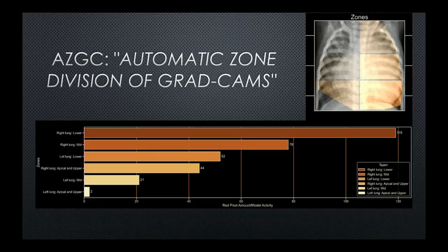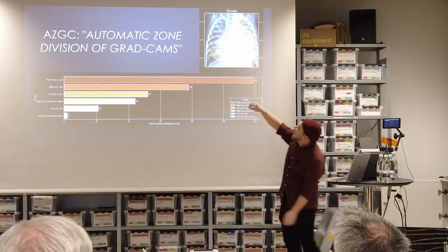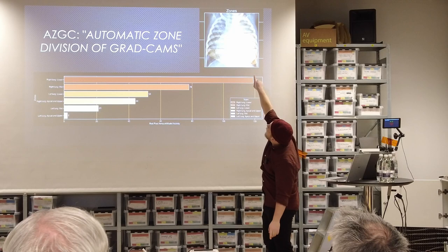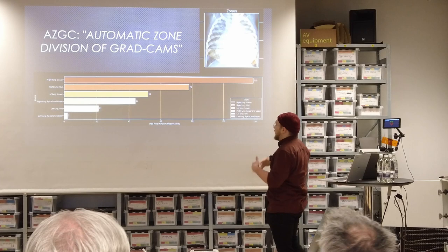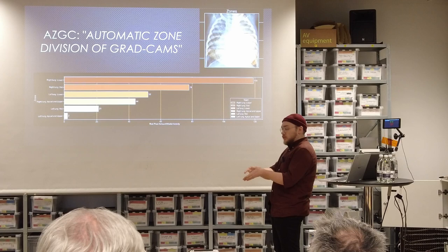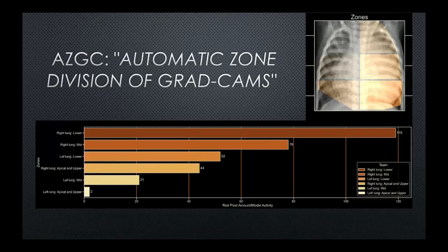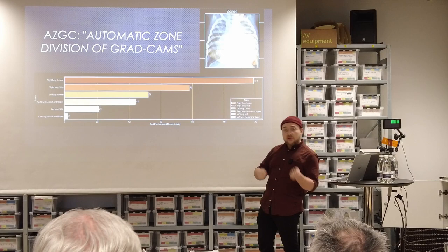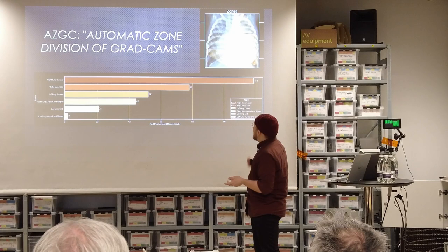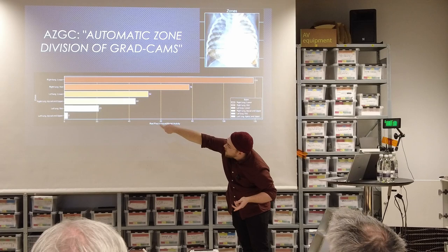So what we did was what we call AZDC — Automatic Zone Division of Grad-CAMs. Using the Grad-CAM output, we divide the lung into zones and color them based on where the most red pixels are concentrated. In theory, the radiologist looks at the X-ray and identifies which zone is most important for their diagnosis, then the AI indicates which zone it thinks is most important, and the radiologist can compare and decide whether they agree. We also generated an automatic box plot showing right lung, left lung, and mid sections with exact numbers.